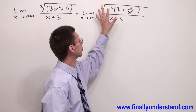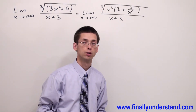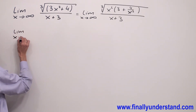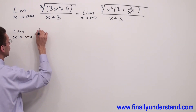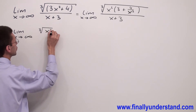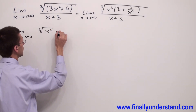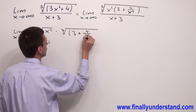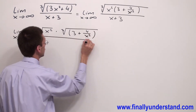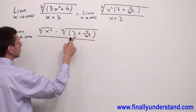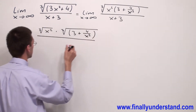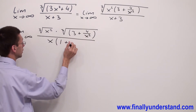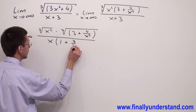Next, I'm going to rewrite this cube root as the product of two cube roots. So I'm going to have the limit with x going to infinity and simply write cube root of x squared times cube root of 3 plus 4 over x squared, over the denominator. From the denominator I'm going to factorize x, so I have x and in parenthesis 1 plus 3 over x.